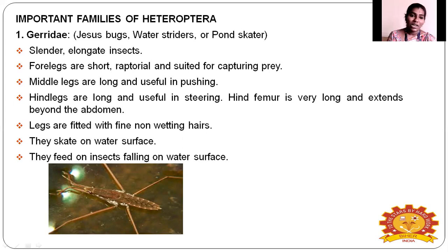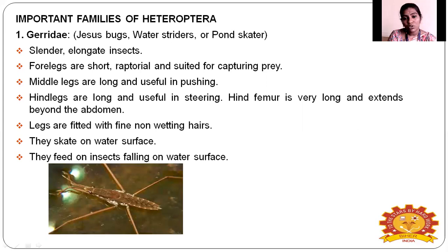First family: Gerridae, commonly called the Jesus bug, water strider, or pond strider. The body is slender and elongated. Fore legs are short and raptorial, used for catching prey. Middle legs are long and used for pushing. Hind legs are also long, used for steering, and the femur extends beyond the abdomen. The legs are fitted with fine non-wetting hairs used to skate on the water surface. They feed on insects that fall on the surface of water.